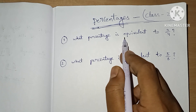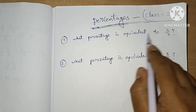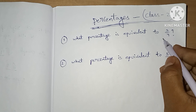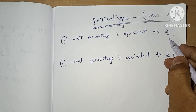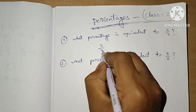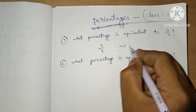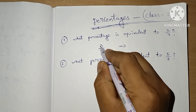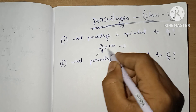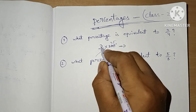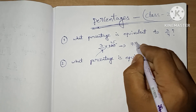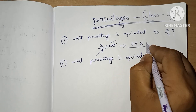What percentage is equivalent to 3/4? If we see a fraction, we need to find the percentage. Fraction to percentage conversion requires multiplying with 100. 4 goes 25 times, and 3 times 25 will be 75. So our answer is 75%.